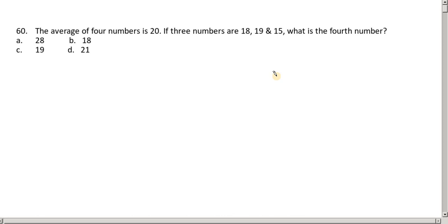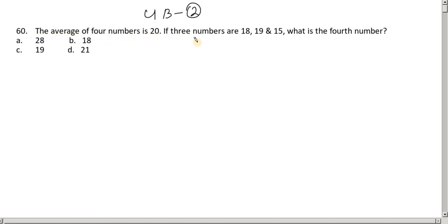Hello, I'm going to show you the question. UB is the second paper, question number 60. I'm going to show you how to solve it. The question is: the average of four numbers is 20. If three numbers are 18, 19, and 15, what is the fourth number?